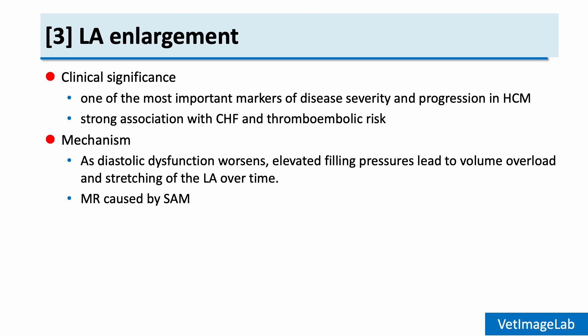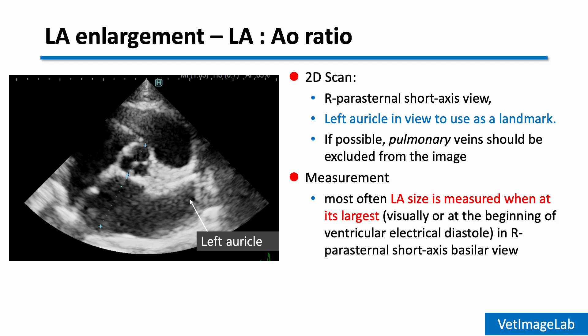In addition, mitral regurgitation caused by SAM can further contribute to atrial enlargement. The most widely recommended method for assessing left atrial size is the LA to AO ratio. It is measured from the right parasternal short axis view at the level of the aortic valve. Make sure to include the left auricle in the view as a useful landmark, and if possible, exclude the pulmonary veins to avoid overestimation.